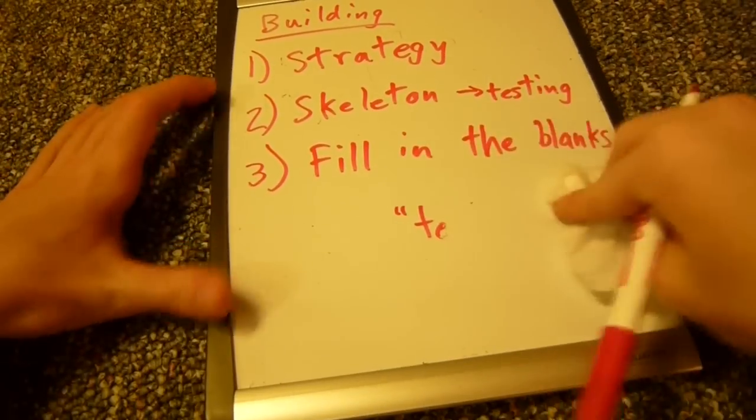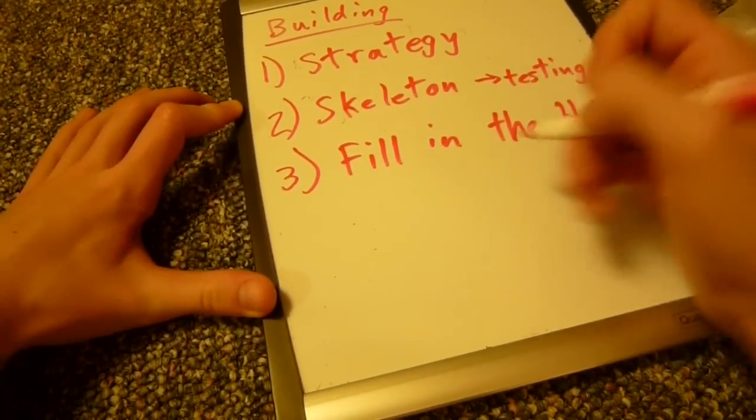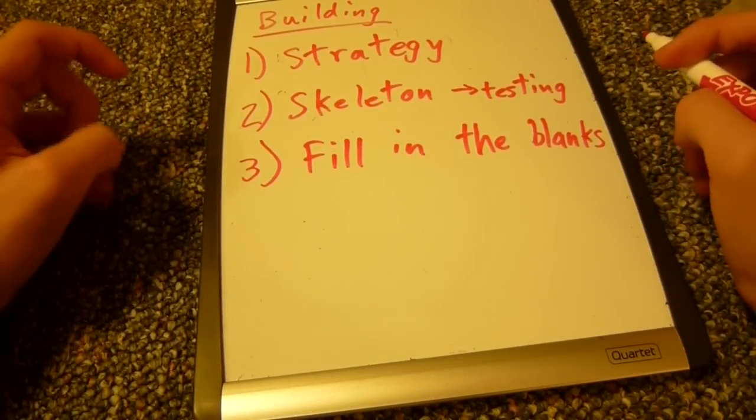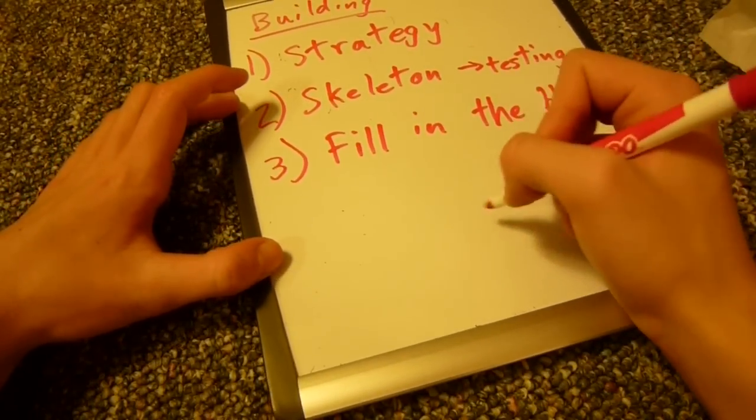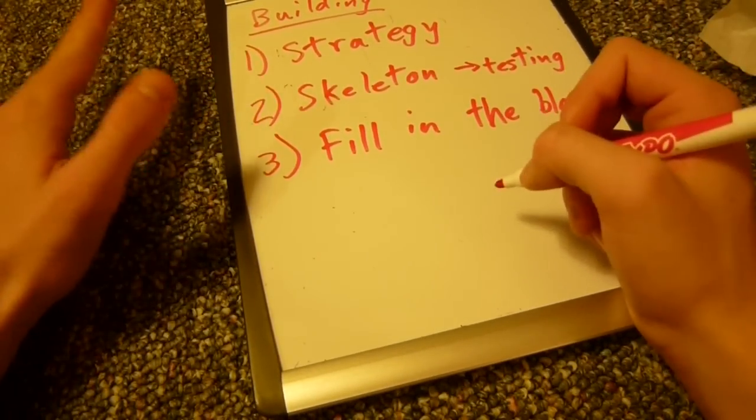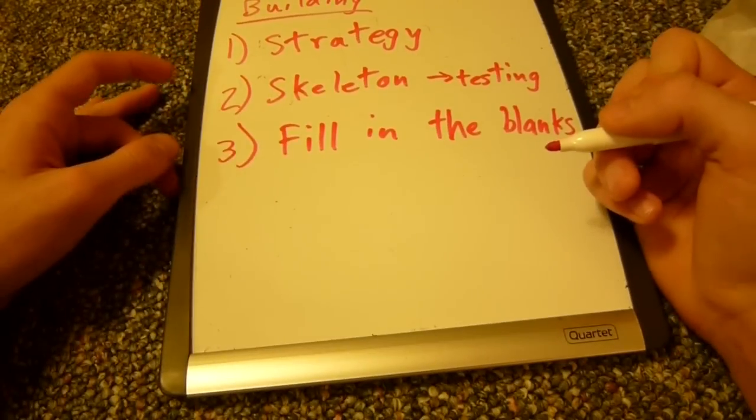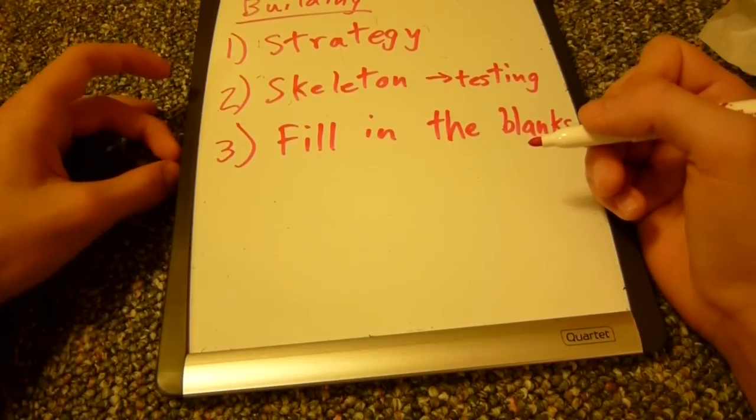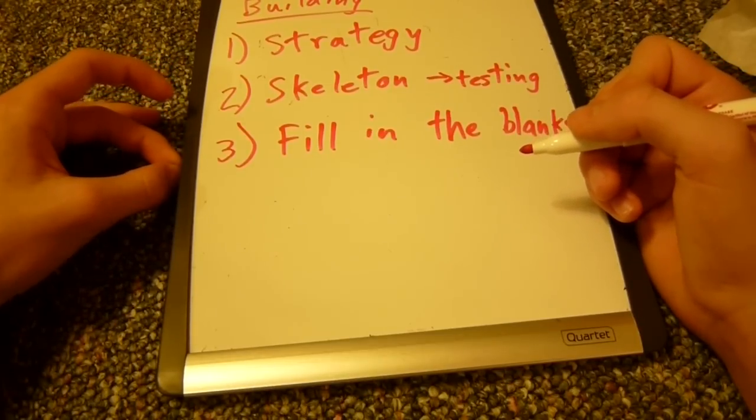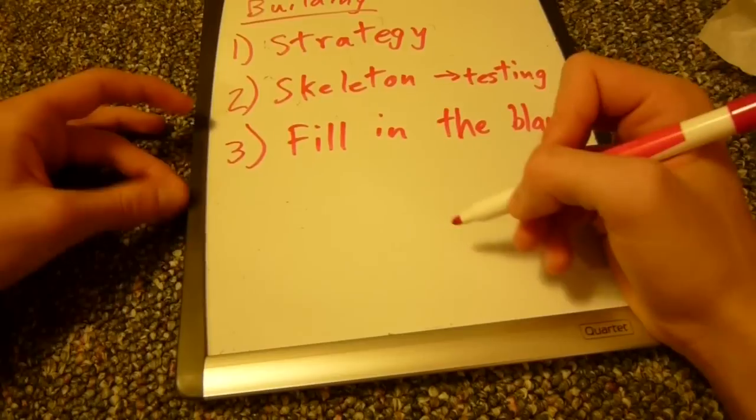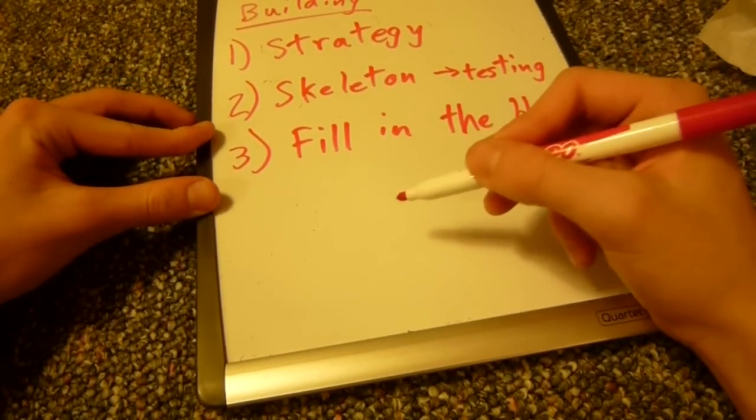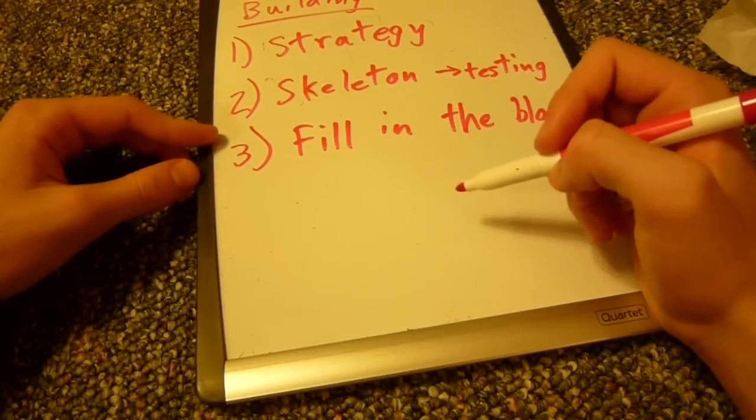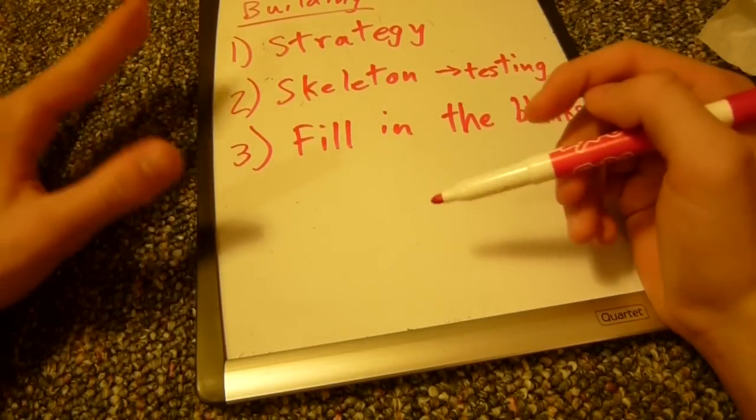For example, for a while, the Zekrom deck, which was Zekrom, Pachirisu, Shaymin, Zekrom could have a lot of trouble against Donphan. When Tornadus came out, Tornadus became instantly a staple in Zekrom decks because Tornadus not only could kind of deal with Donphan in, I think, two hits. That sounds about right. And but also, it had a resistance to Donphan's fighting attacks. Which was really good because, otherwise, Zekrom would get just steamrolled by Donphan.